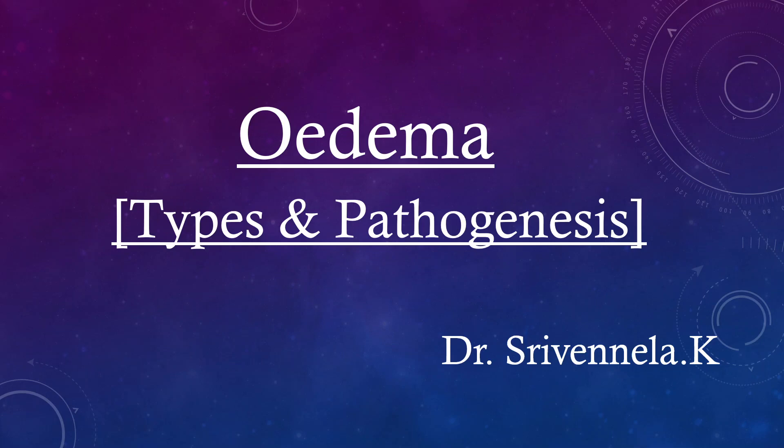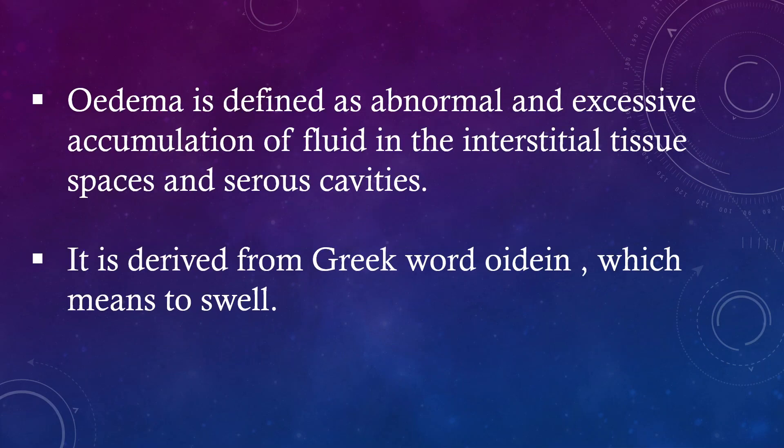Hello everyone, I am Dr. Srivanella. Today's topic is Edema: Types and Pathogenesis. Edema is defined as abnormal and excessive accumulation of fluid in the interstitial tissue spaces and serous cavities. It is derived from the Greek word 'oidin' which means to swell.